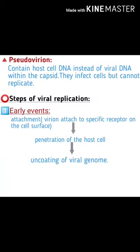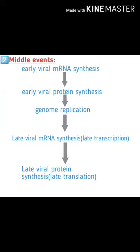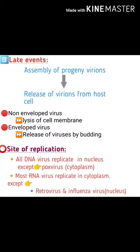General steps of viral replication — Early events: attachment of the virion to specific receptors on the cell surface, then penetration of the host cell, then uncoating of the viral genome. Middle events: early viral mRNA synthesis, early viral protein synthesis, then genome replication, late viral mRNA synthesis, and late viral protein synthesis. Late events: assembly of progeny virions, then release of virions from the host cell.